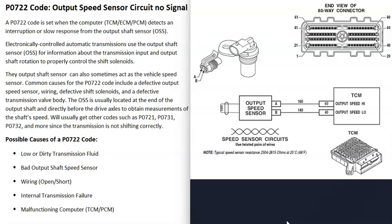Once you locate the output speed sensor, there are a few ways to test it. If you have a good OBD2 scan tool, you can use that. You can also look up the rated ohms for that speed sensor — there will be differences depending on the vehicle. Once you find the rated ohms the sensor is supposed to be at, you can check it, and if it's outside that range, you know it's bad and needs to be replaced.